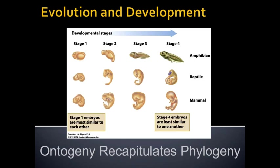One of the most famous encapsulating statements about evo-devo is: ontogeny recapitulates phylogeny. A lot of big words, but let's make sure you understand what this means, and then we'll look at the diagram illustrating this.